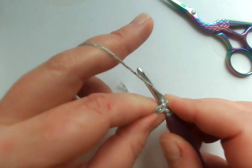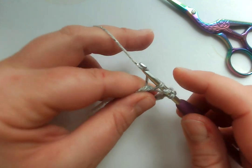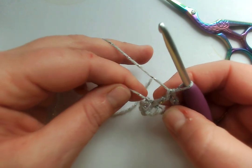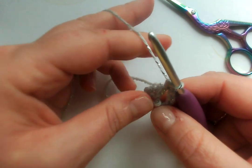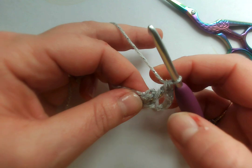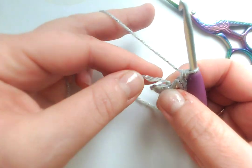Yarn over, in you go, yarn over, pull through two, pull through two. I like to work around the tail as well as the chain.